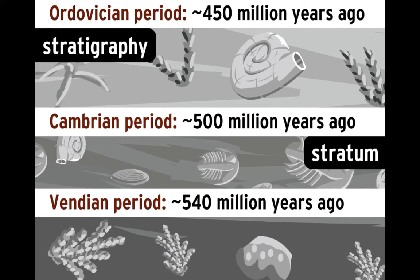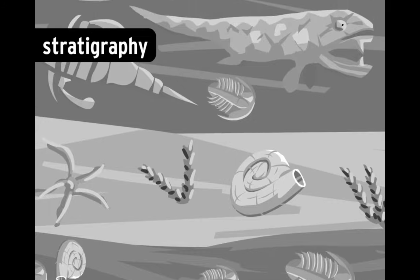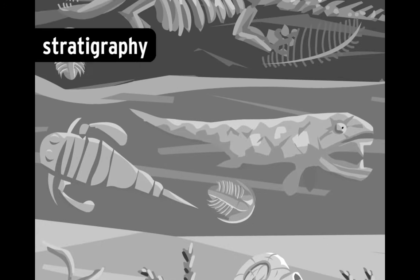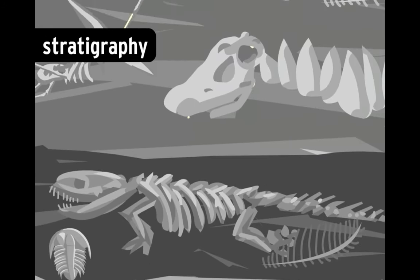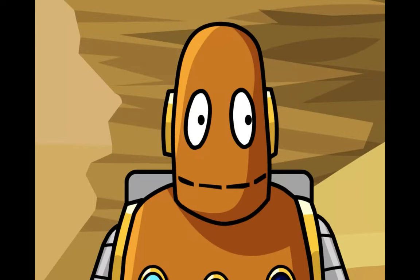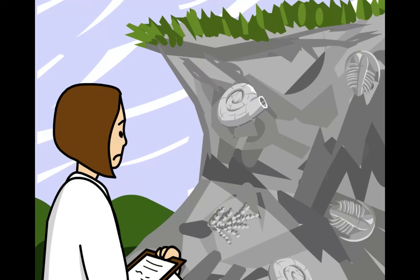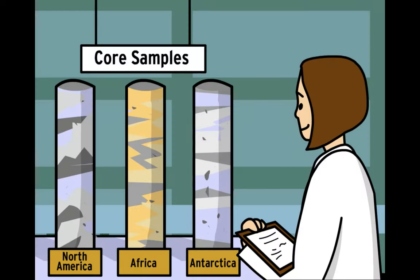By studying the different layers, scientists can get a good idea of how animals evolved and how the rock composition of an area has changed over time, and they can also put everything into an order. Stratigraphy isn't perfect, though — over millions of years, rock can break, bend, erode, and shift.